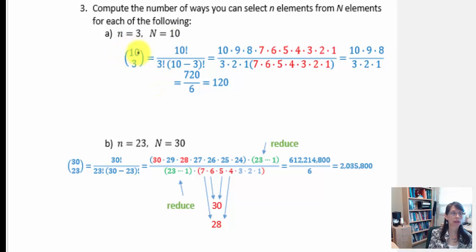So the notation would be 10 over 3 in parentheses. Notice there is no fraction bar. This is not a fraction. It is the combinatorial notation.